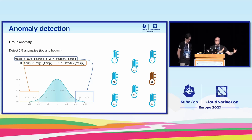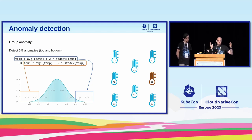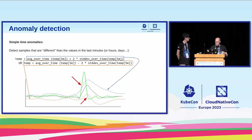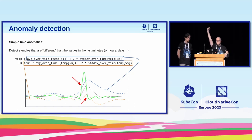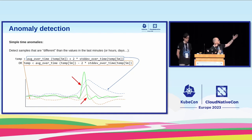We can detect group anomalies, but we can also do this across time — if in the last hour, day, or week a metric has a certain value and then suddenly there's a spike, maybe this is something worth studying. This can be done with PromQL as well.